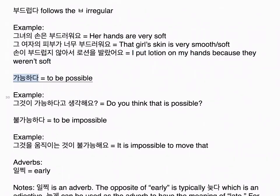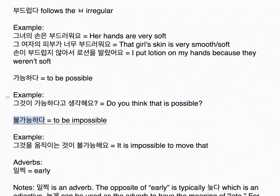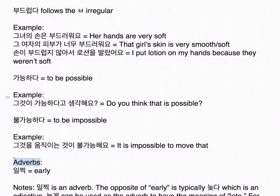가능하다 means to be possible. Example: 그것이 가능하다고 생각해요? Do you think that is possible? 불가능하다 means to be impossible. Example: 그것을 움직이는 것이 불가능해요. It is impossible to move that.